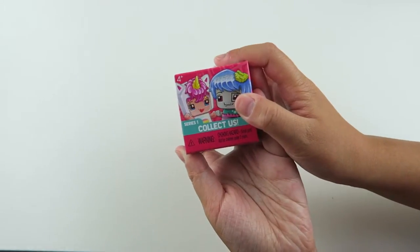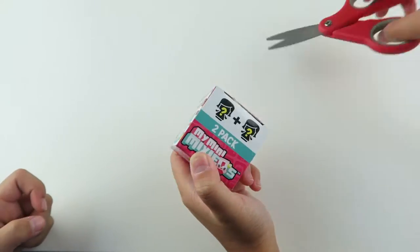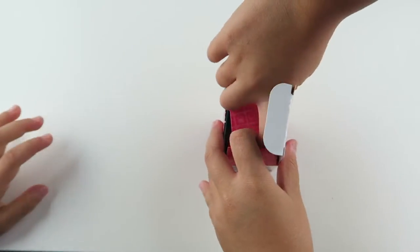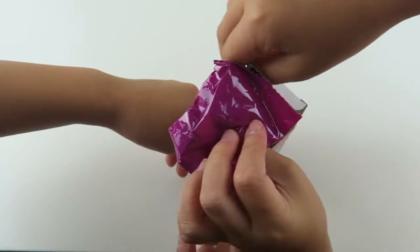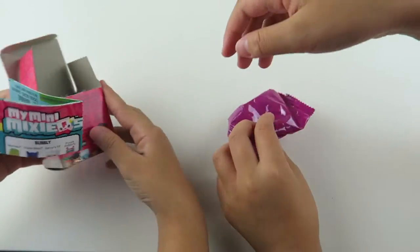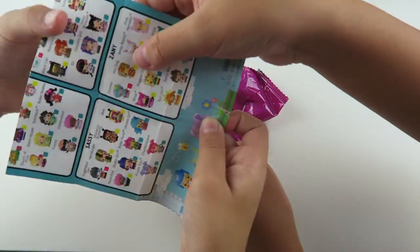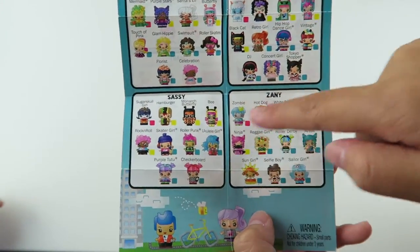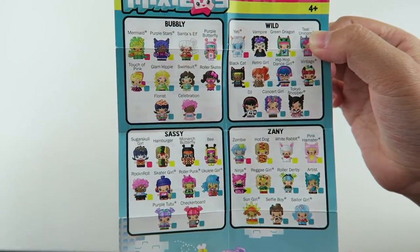So I'm going to be opening up the My Mini MixieQs series one two pack. So here is the bag and we have the checklist. Here's the checklist. So they have different sections. So all of it is bubbly, wild.